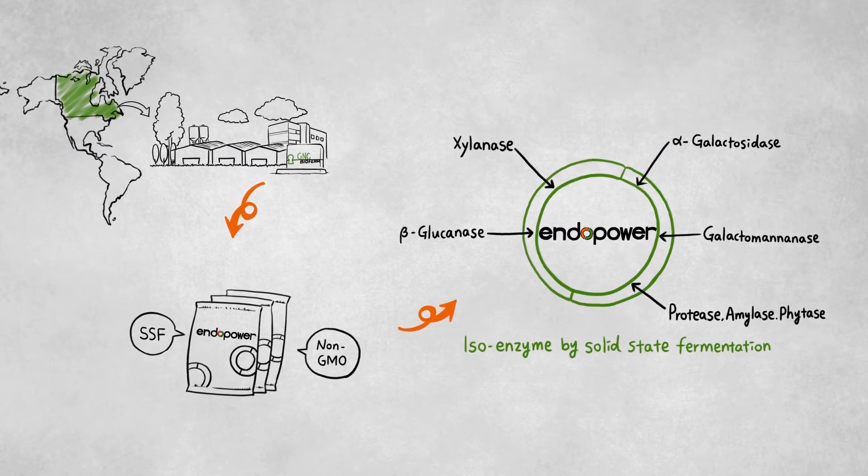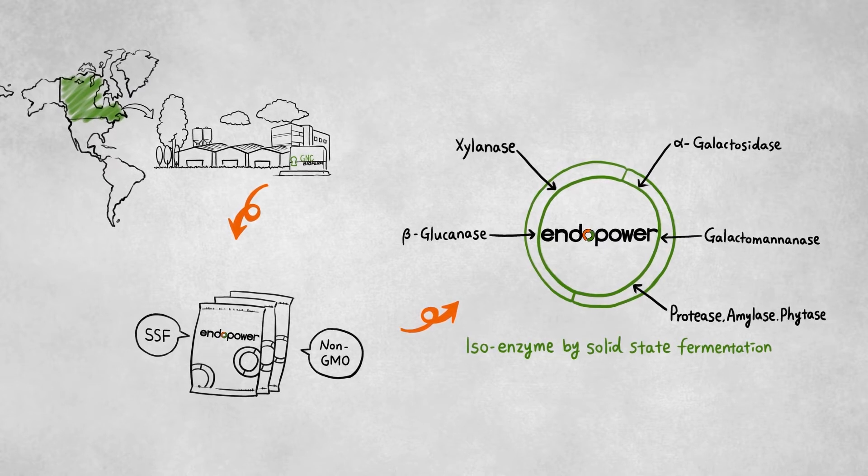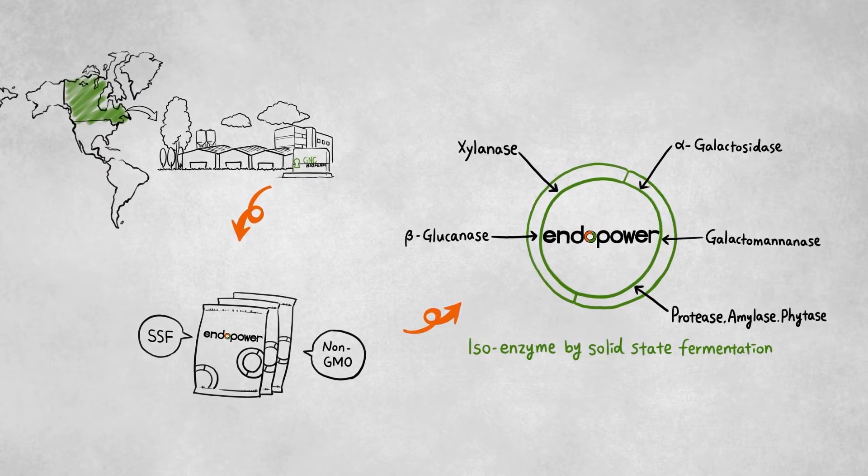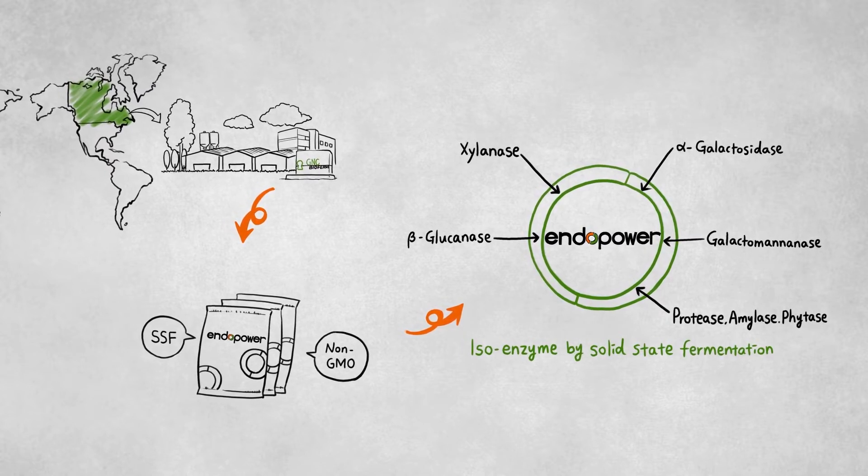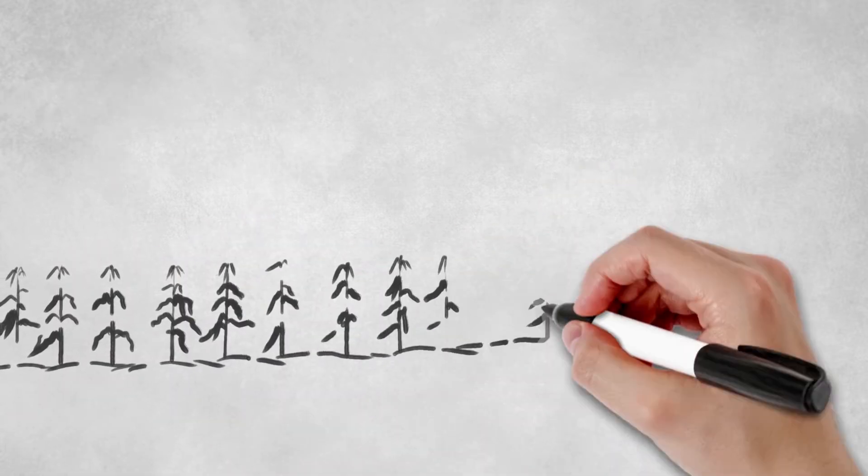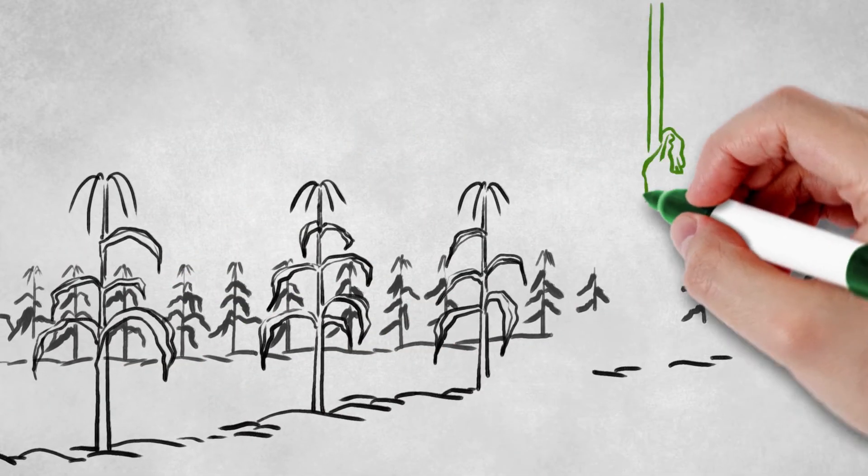Based on the broad range of enzymatic profile, EndoPower can result in much better performance of livestock animals. The cell walls of grain consist mainly of various NSPs.